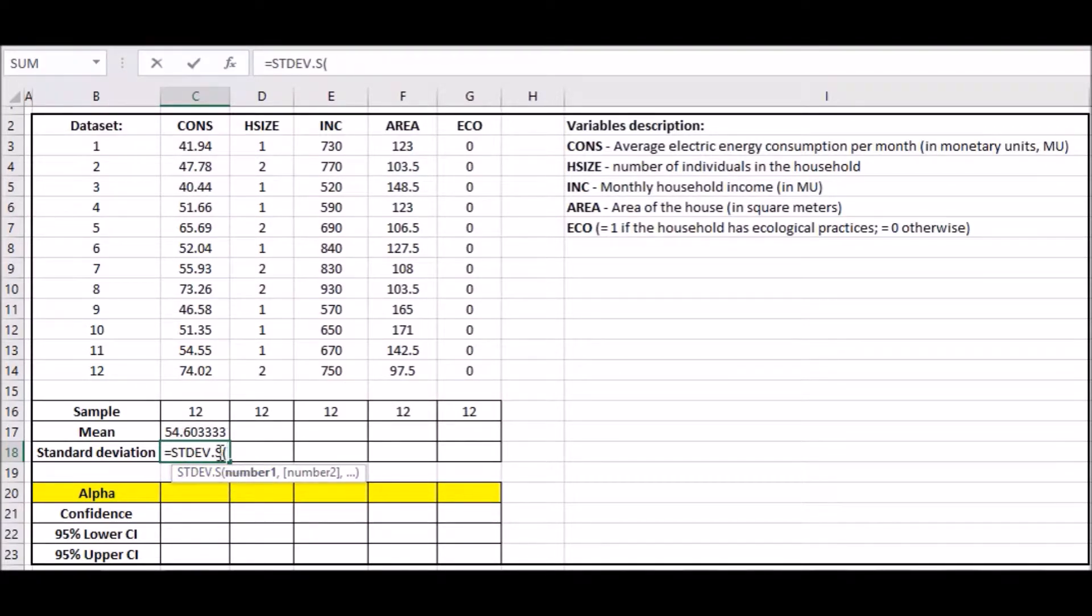The difference in formulas is that the sample size uses n, while population uses n minus one. Do the same thing: press Enter and you get these results. Highlight, drag the corner, and this will copy the formula.